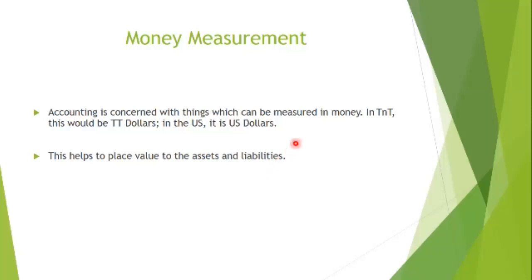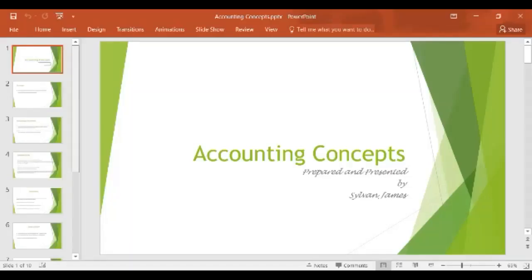Each country has their own money measurement — in Trinidad we have TT dollars, in the US they have US dollars, in Europe they have the euro, in Britain they have pound sterling, and in Japan they have yen. Each country measures in their own currency, and this helps us to place value on assets and liabilities. That brings us to the end of our presentation on accounting concepts; you can read it again on page one.